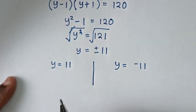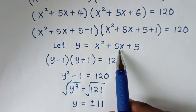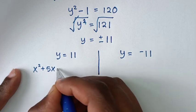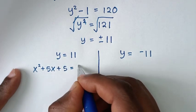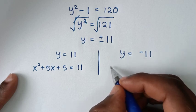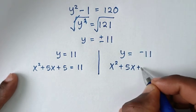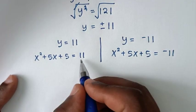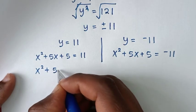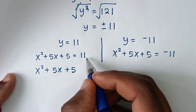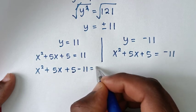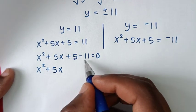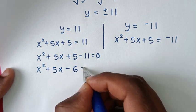Then we recall that y equals x squared plus 5x plus 5. From y equals 11: x squared plus 5x plus 5 equals 11, so x squared plus 5x minus 6 equals 0. From the coefficients: a equals 1, b equals 5, c equals negative 6.